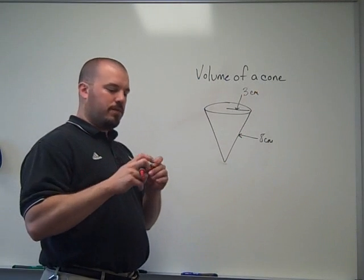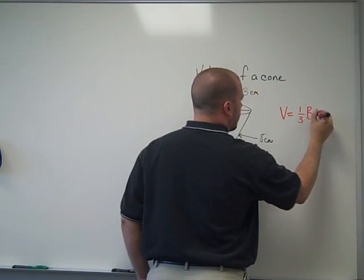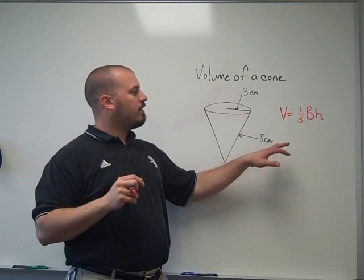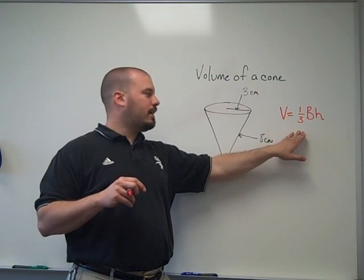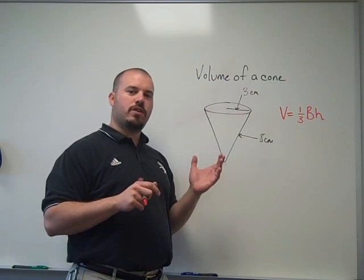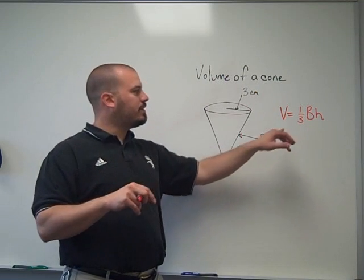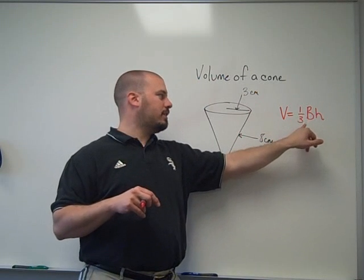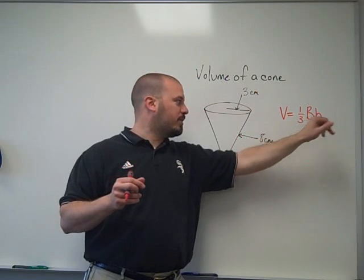The formula for volume of a cone is one-third the area of the base times the height. For information on why this is the formula, take a look at the previous video that was posted. Or if you're watching this on YouTube, you want to just search for volume of a cone and there's a video of somebody else's where he's pouring water from a cone into a cylinder. Basically, the end result is that the cone is one-third the volume of a cylinder with the same base and the same height. So there's video out there already on that, so I didn't post it.